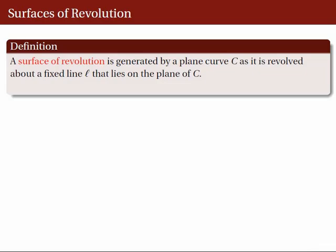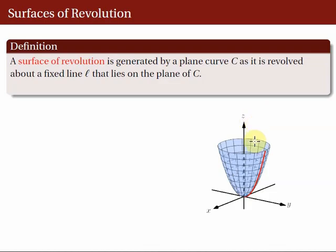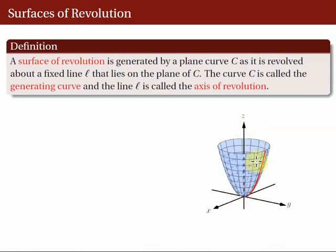Let's continue our discussion on surfaces of revolution. We define a surface of revolution to be the surface generated by a plane curve C as it is revolved about a fixed line L that lies on the plane of C. To illustrate, let's consider the red curve lying on the YZ coordinate plane as the plane curve C, and the Z-axis as the fixed line L. A surface of revolution is obtained by revolving the red curve about the Z-axis, giving us the blue surface shown. We call the red curve the generating curve and the fixed line L the axis of revolution.